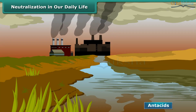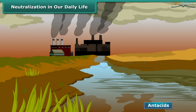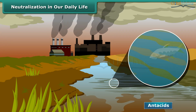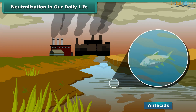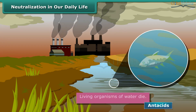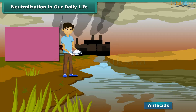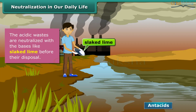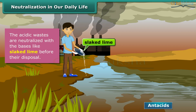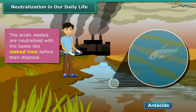Many factories release acidic wastes which, after falling into water bodies, damage them. As a result, living organisms in the water die. The acidic wastes are neutralized with bases like slaked lime before their disposal.